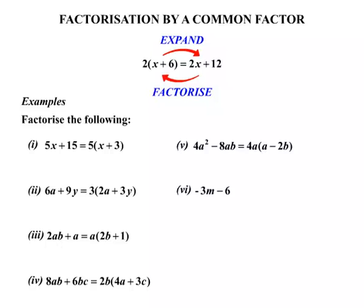Our sixth example: negative 3m minus 6. Well, in this case, notice that both terms are negative.